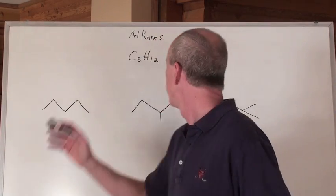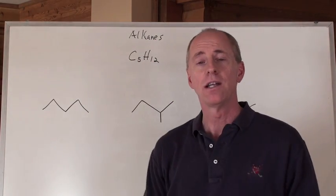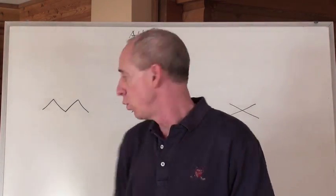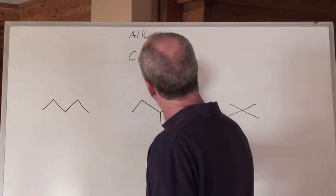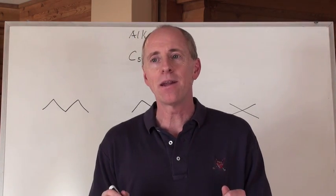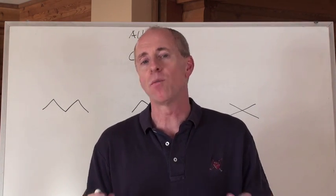How would we name all the isomers of C5H12? Now C5H12, you can draw that different ways. And what would the specific names be for them?